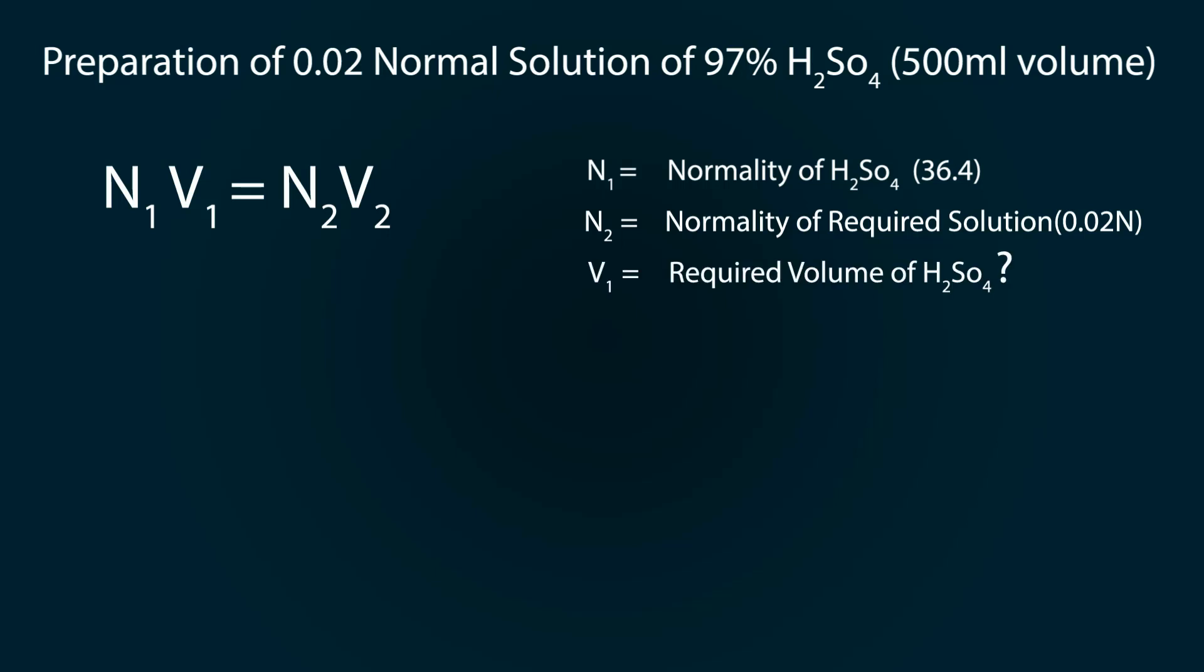V1 is the required volume of 97% H2SO4, and V2 is our final solution volume which is 500 milliliters. Now let's start our calculation.